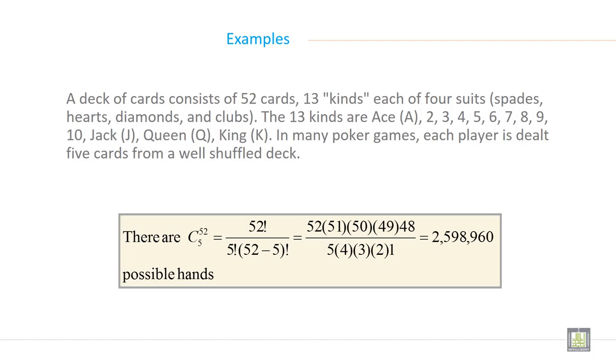A deck of cards consists of 52 cards, 13 kinds, each of 4 suits: spades, hearts, diamonds, and clubs.